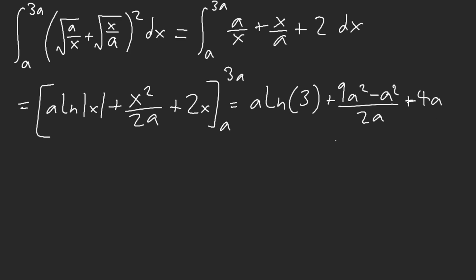So now, we can actually simplify this if we want to. This is 8a squared, yes, so we're going to get 4a plus 8a. Oh wow, would you look at that? We have a times 8 plus ln of 3.